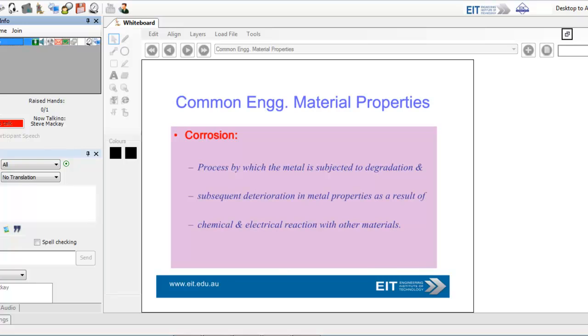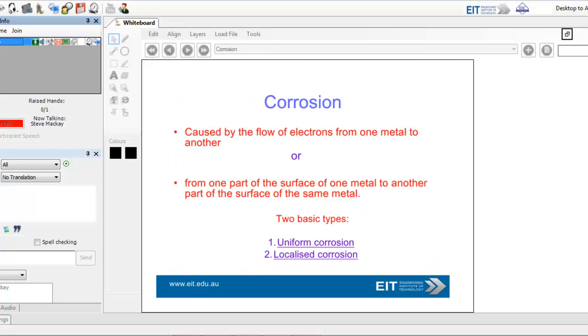I can't go through every slide here, but basically some of the key ones. Corrosion is another form of damage, where the process by which metal is subject to degradation. Corrosion is obviously everywhere. It's chemical action. There's two types: uniform and localized corrosion.